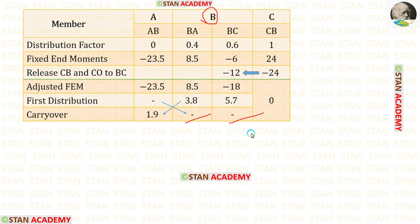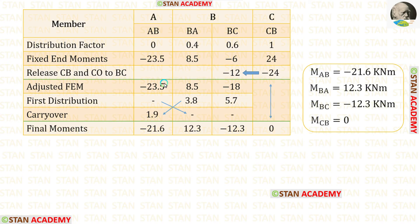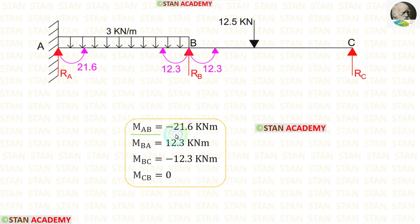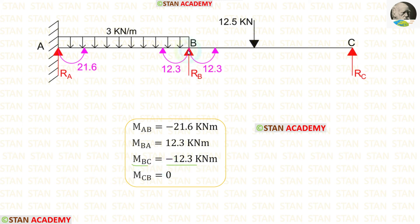Let us add all values and find the final moments. Adding the values gives MAB = −21.6 kNm, MBA = +12.3 kNm, and MBC = −12.3 kNm. MAB is negative, meaning it acts anti-clockwise. MBA is positive, meaning it acts clockwise. MBC is negative, meaning it acts anti-clockwise.